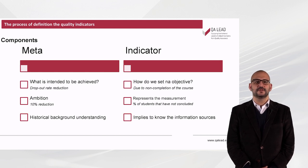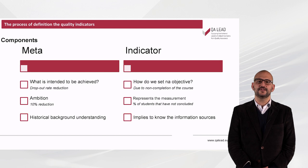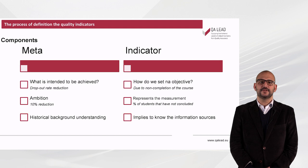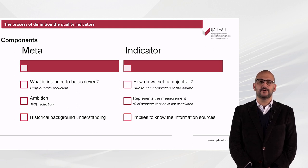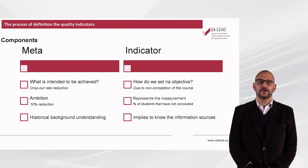The target also represents the ambition. For example, a reduction of 10%. To set the target in a proper way, it is necessary to understand the history of the objective. On the other hand, we have the indicator. It represents the way of measuring the objective. For example, measuring the dropout rates through non-conclusion.